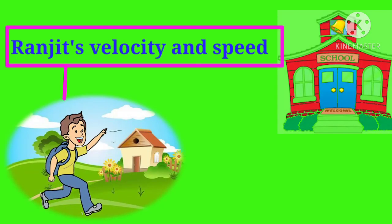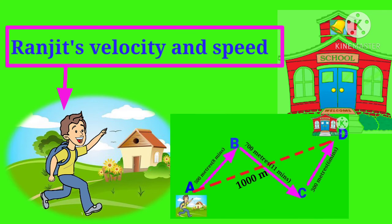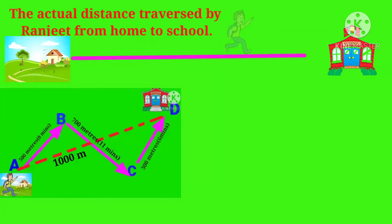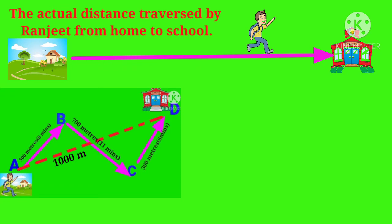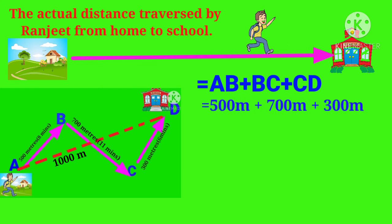Let us now use the above formulas to find out Ranjit's velocity and speed when he goes to school, as shown in figure 7.2. The actual distance traveled by Ranjit from home to school is AB plus BC plus CD, where AB is 500 meters, BC is 700 meters, and CD is 300 meters. Calculating: 500 + 700 + 300 = 1500 meters.